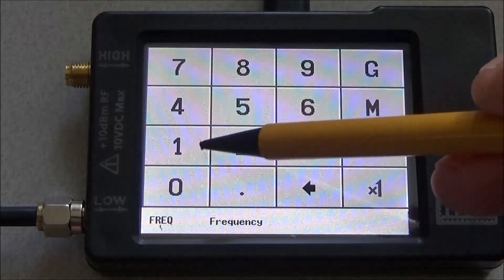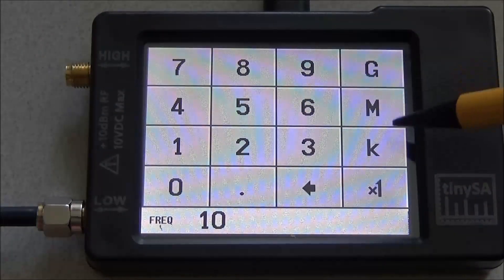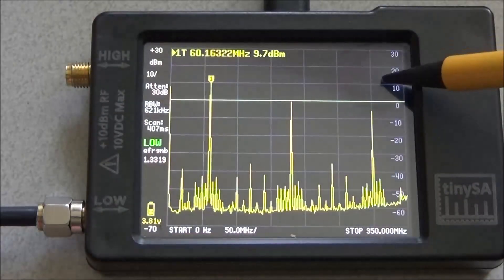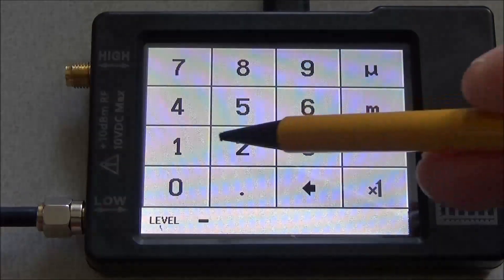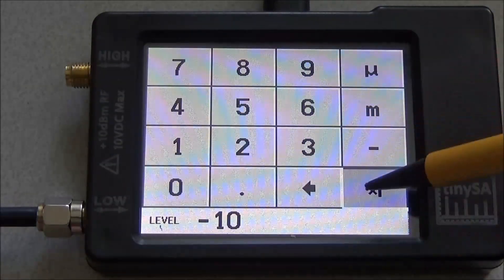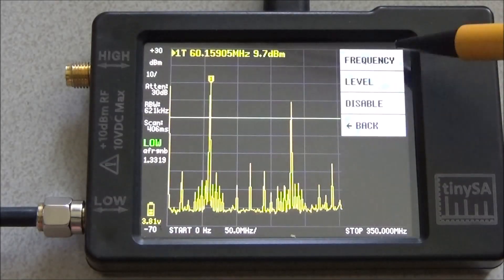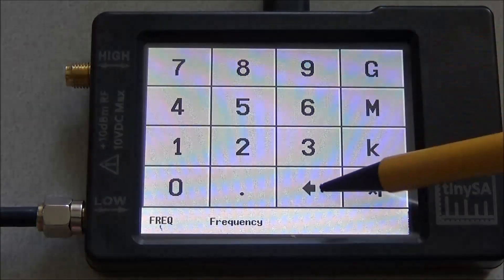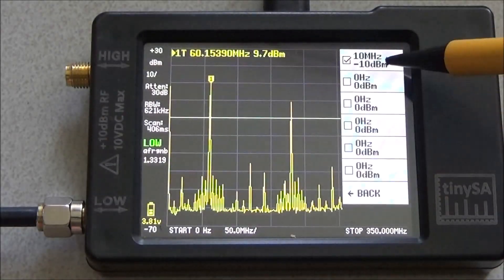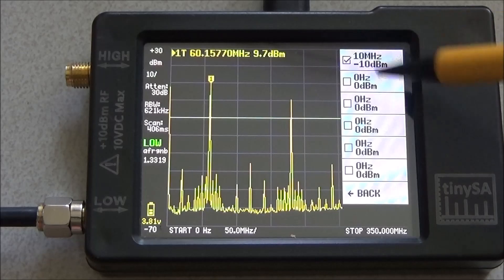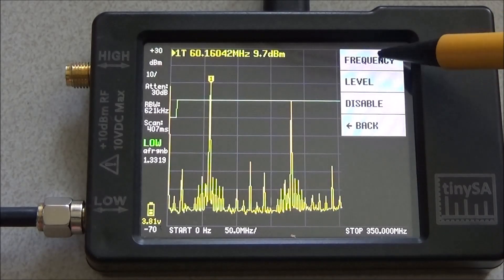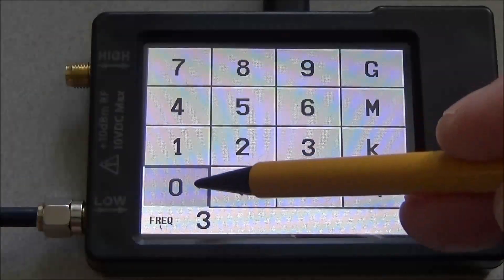So we say it starts at 10 MHz at level minus 10. So that's the first entry in the table. And we use now the second entry, we say 300 MHz.